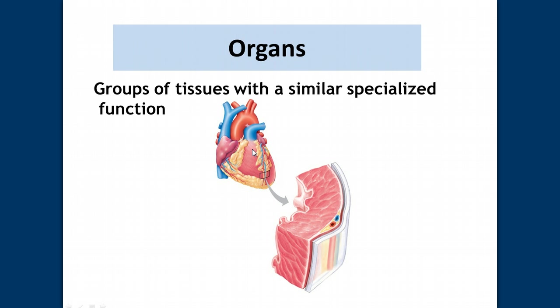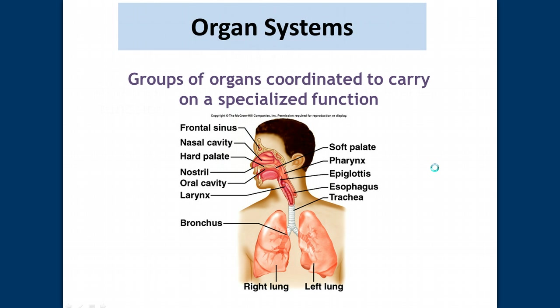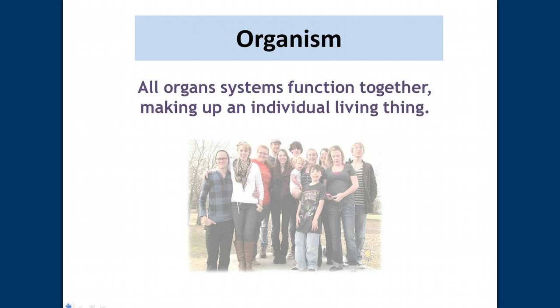A group of tissues specialized for a function forms an organ. Then you have organ systems — groups of organs that coordinate to carry out a specialized function, such as those found in the respiratory system. All those organ systems functioning together make up an individual living thing.